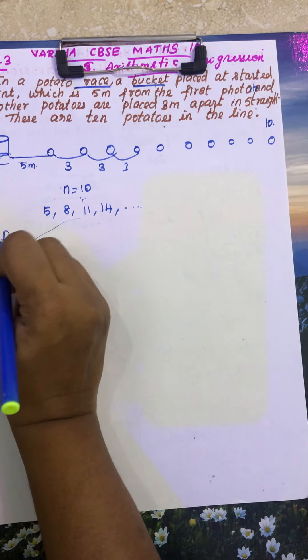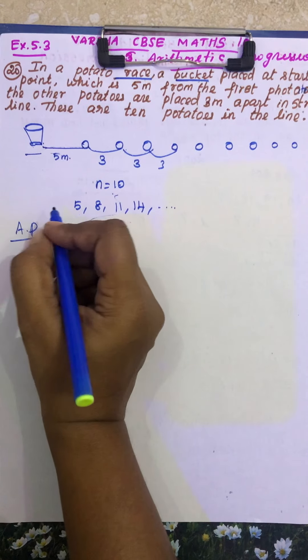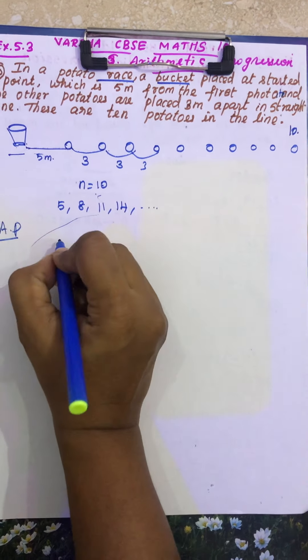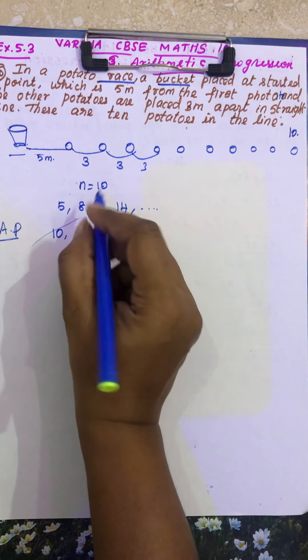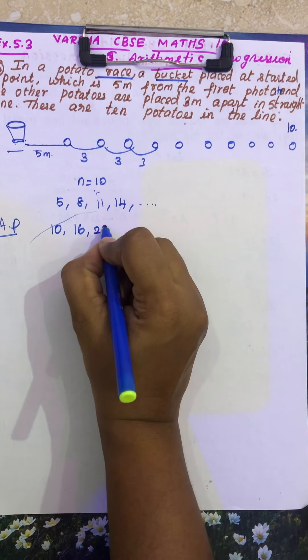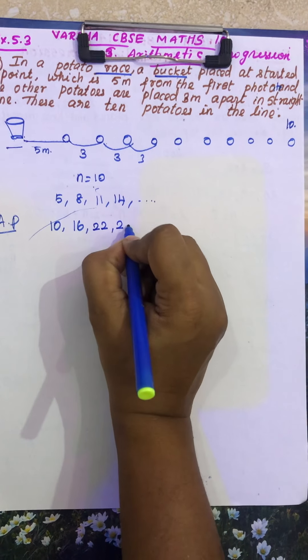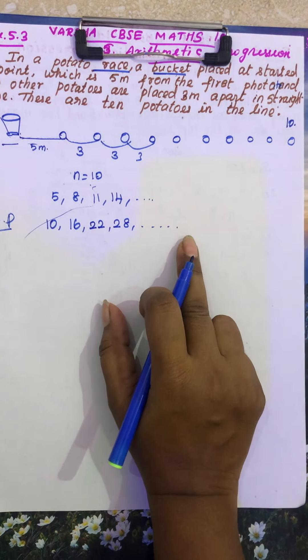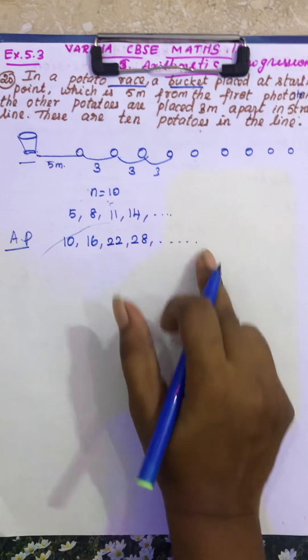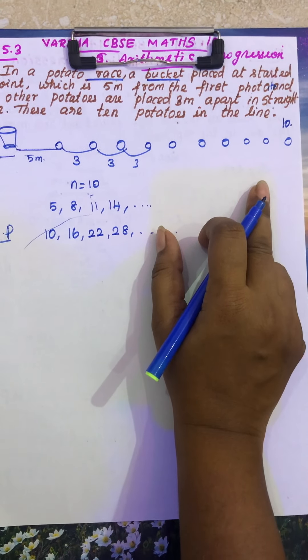So the exact AP is, first she is coming 10 meters, second 16, second 22 and then 28 etc. So totally, there are 10 times she has to come back.